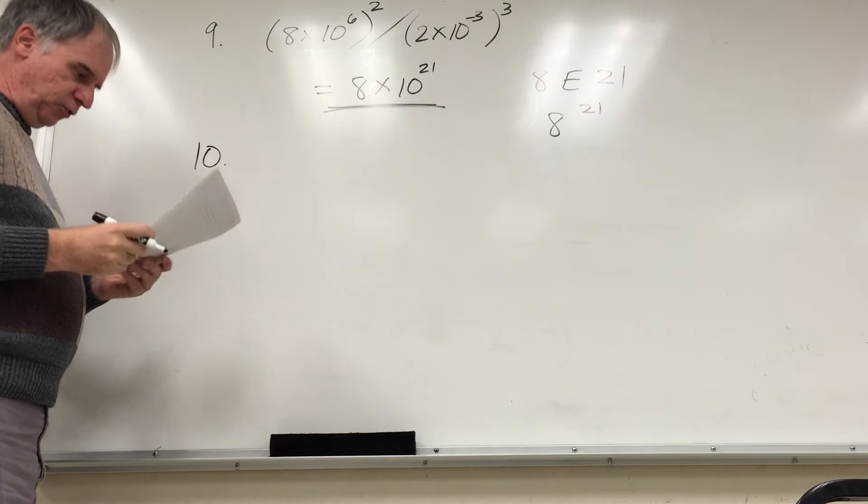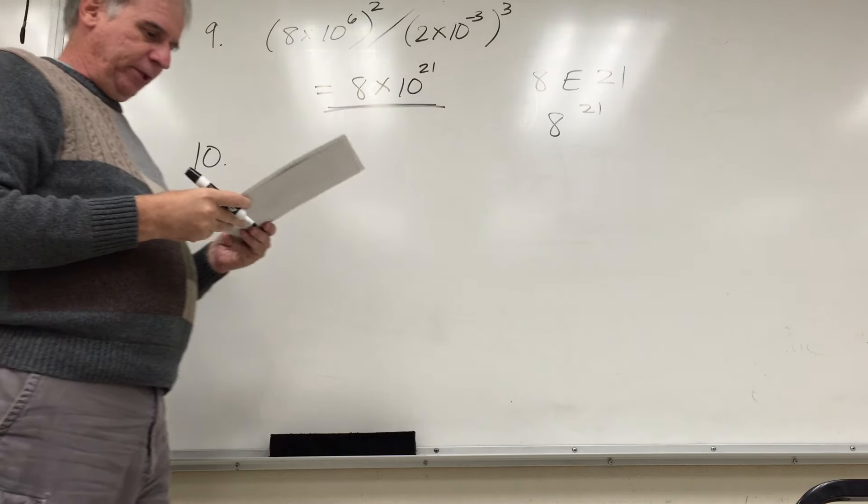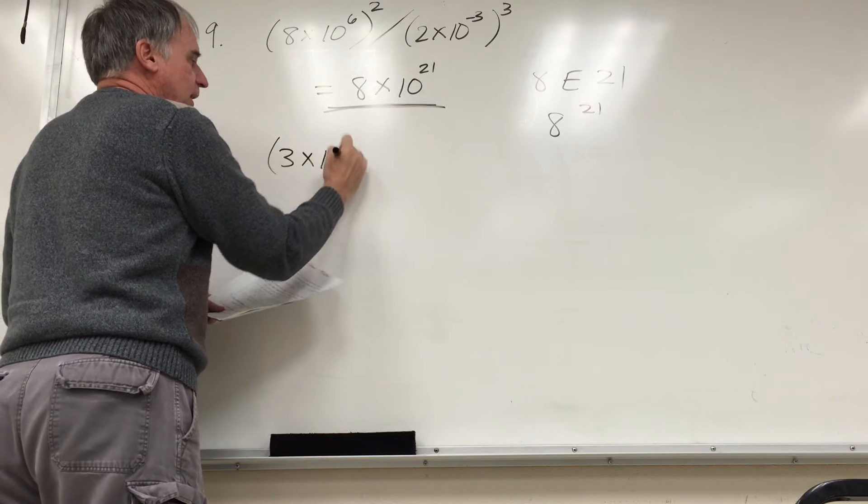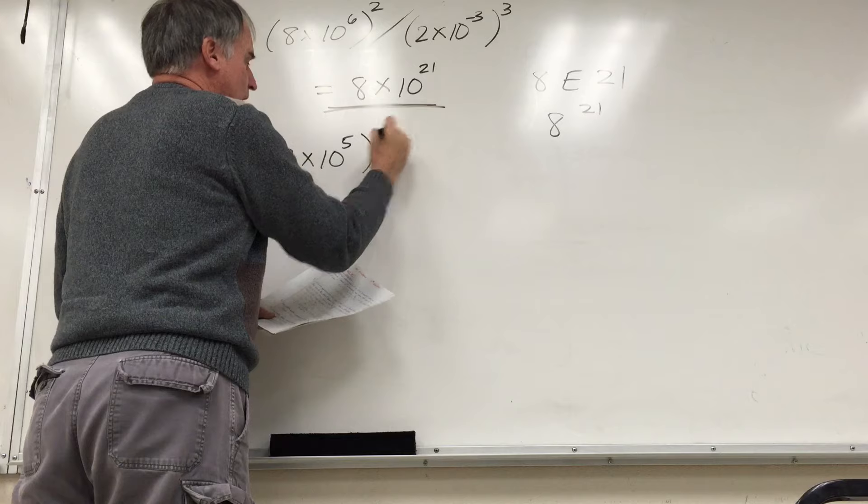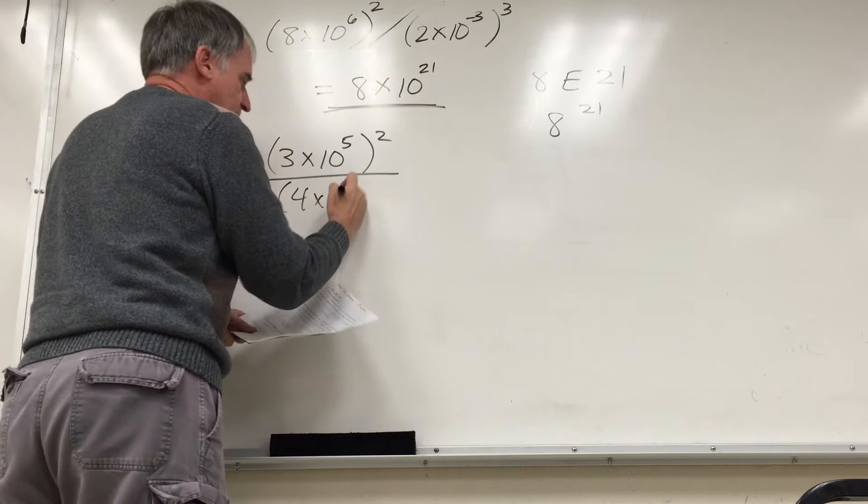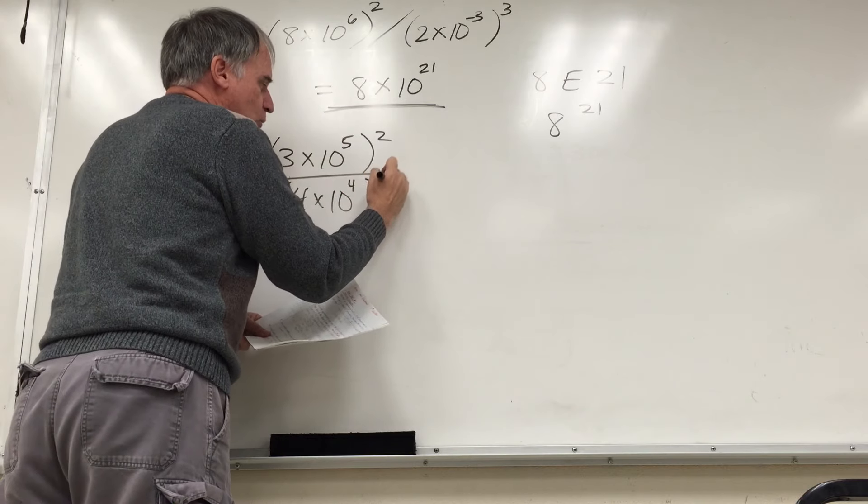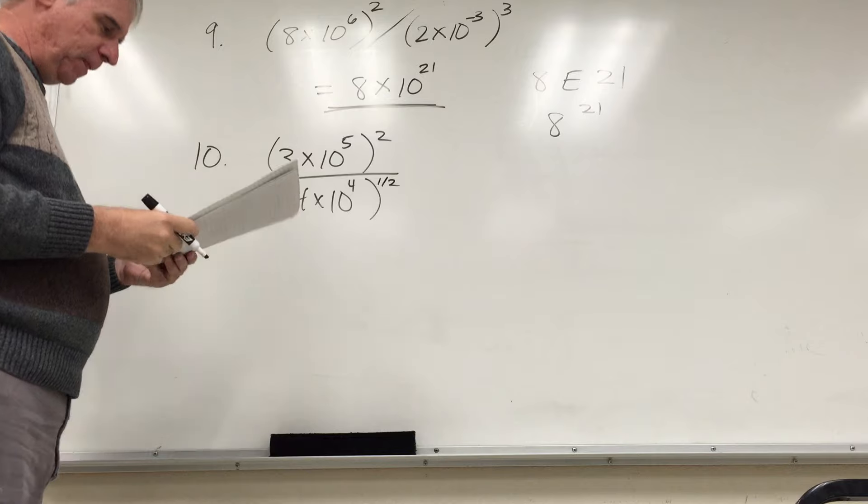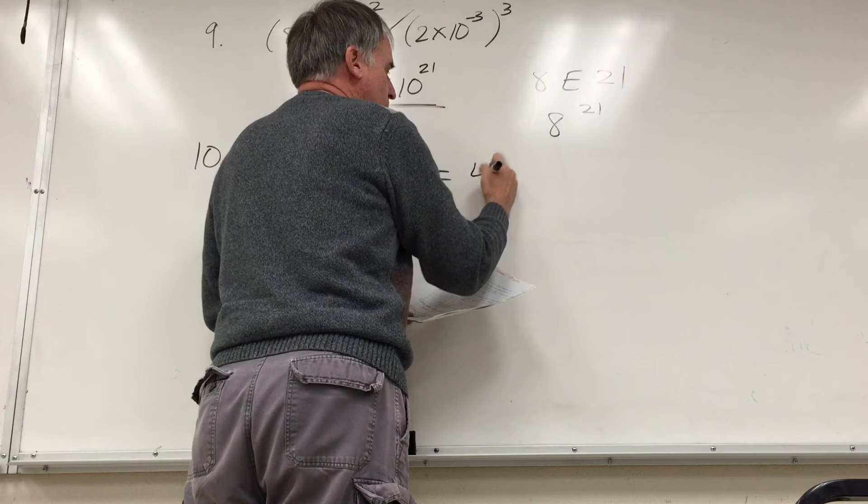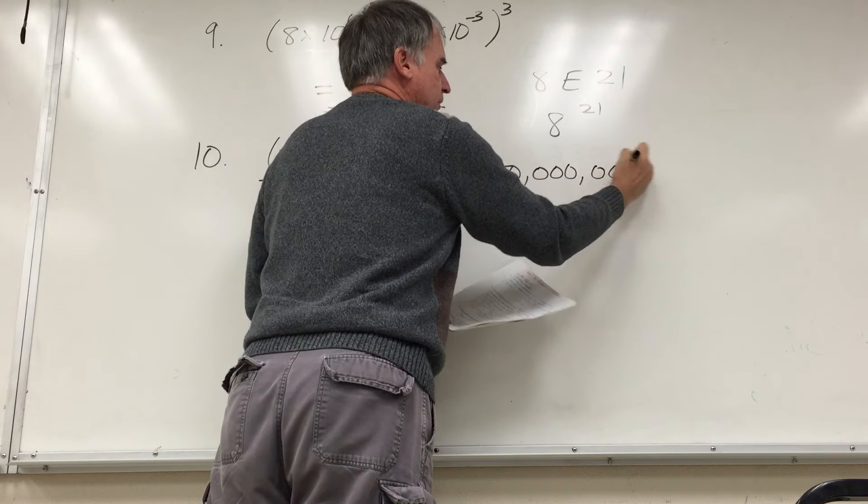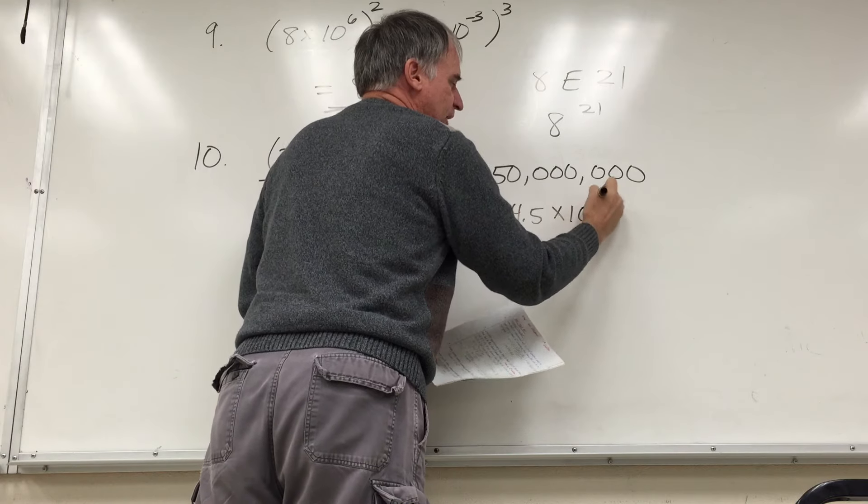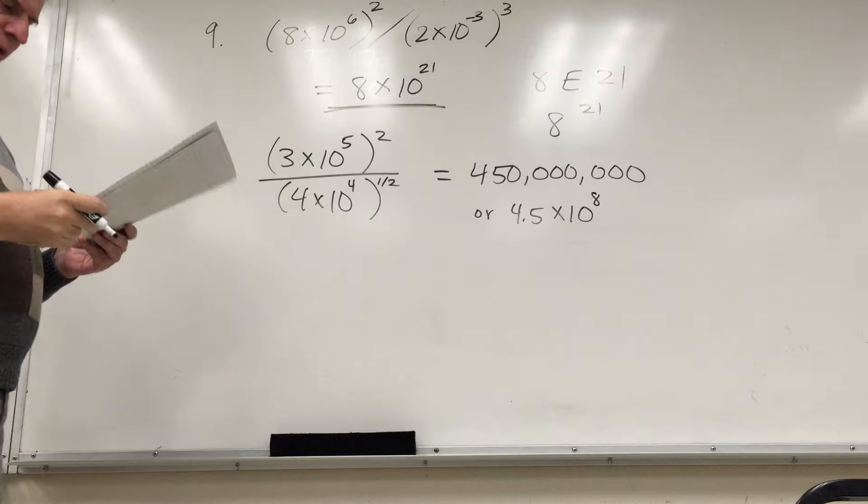Problem 10 is very similar. Numerically evaluate, in this case, 3 times 10 to the 5th squared divided by 4 times 10 to the 4th to the 1 half power. The answer is 450 million or 4.5 times 10 to the 8th. Either of those are equivalent, so either one is fine.